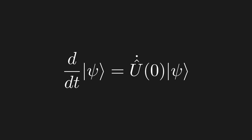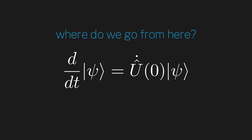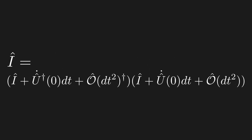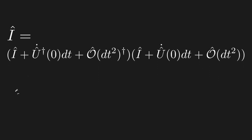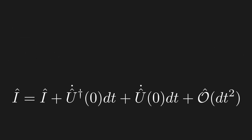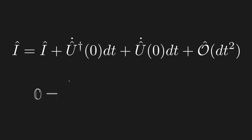By looking at tiny time scales we have derived a differential equation for the time evolution of our quantum state. Now we haven't yet used the information that U is unitary. To input that information, let's analyze the unitary property on the Taylor expansions. Starting with U†U = I, we plug in the Taylor expansion — distributing the dagger — and multiply out. We get the identity, then U-dot† dt, then U-dot dt, and finally terms of order dt² and higher. Canceling both identities and dividing by dt, then sending dt to zero, the higher-order terms vanish.